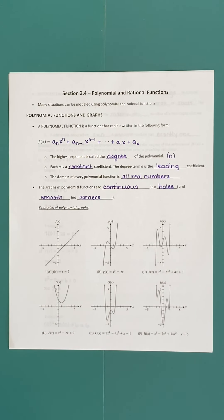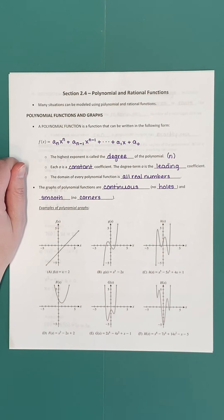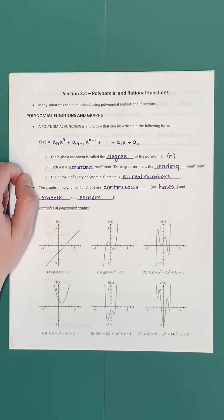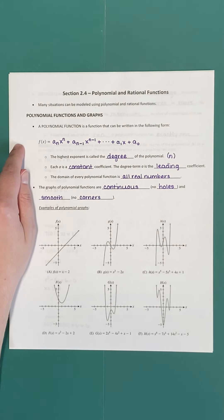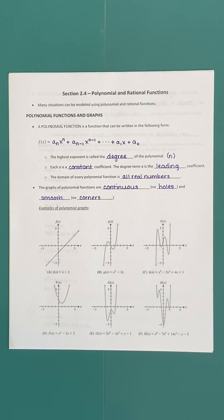We've actually looked at three functions that fall under the category of being polynomial: the identity function f of x equals x, the squaring function (also called the quadratic function), and the cubing function. All three are considered polynomial based on their structure. If you picture what those graphs look like, they start all the way on the left-hand side and the tails tell us that they go all the way to the right-hand side — they have a domain of all real numbers.